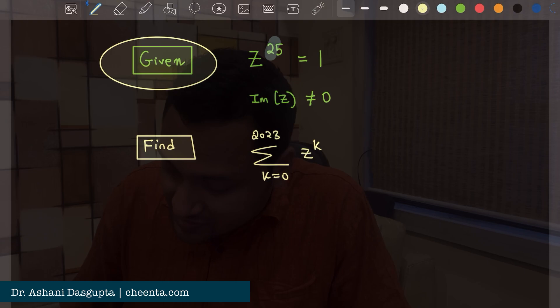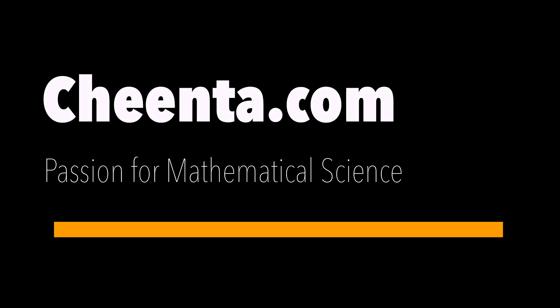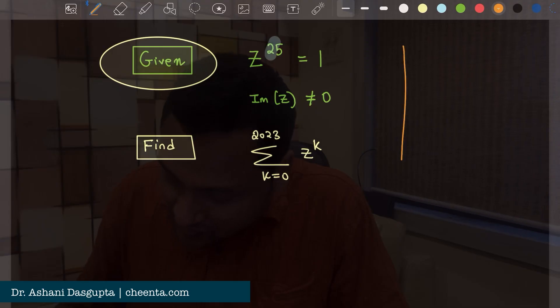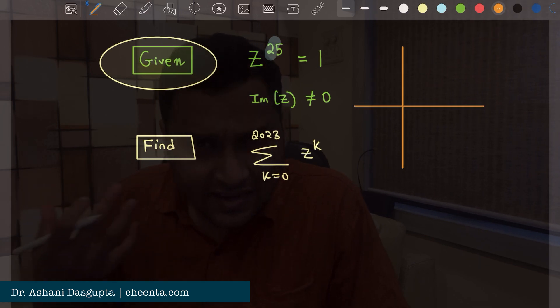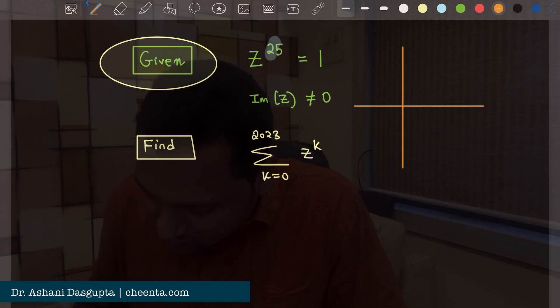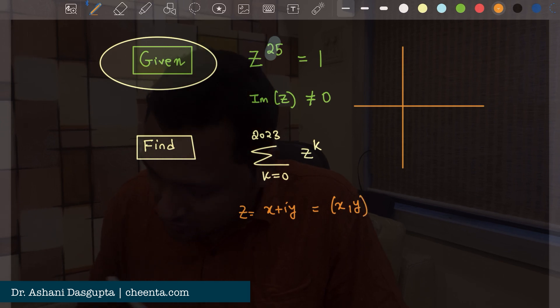What this basically means is that if you think about the argand plane or the complex plane, basically the xy plane, every complex number z is x plus iy or you can write it as a coordinate x comma y. Now this part is called the real part of z and this part is called the imaginary part of z.